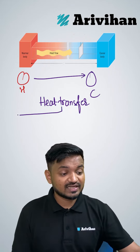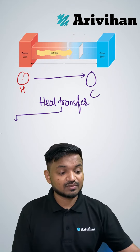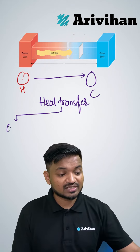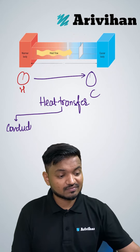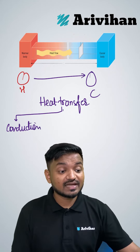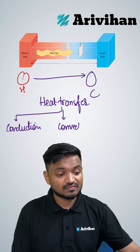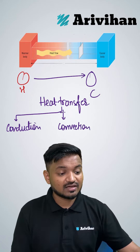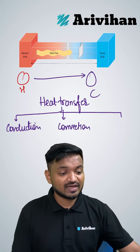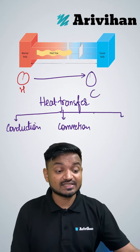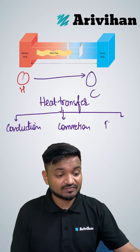The first category that we have is what is called as conduction. The second category that we have is called as convection. And the third category that we have is known as radiation.